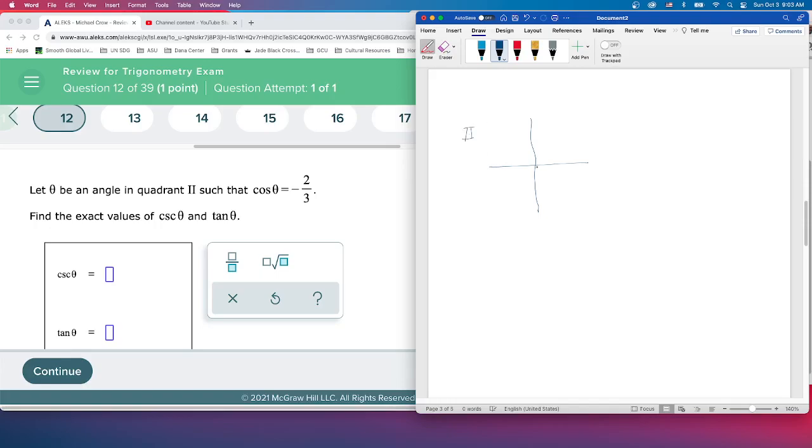Remember, cosine is adjacent over hypotenuse. So the fraction we're given tells us that this is negative two—the distance here. It's a distance of two, but we'll mark it as negative two because that's where we are. Over here's the hypotenuse, we're given as three. The angle comes from zero up to here, that's really theta, but we can use the reference angle. Right here's our reference angle, and so this is going to be an opposite side.